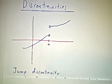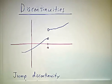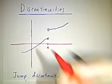This is called a jump discontinuity, because you're just jumping from this height to this height, and it doesn't matter what the actual value is.